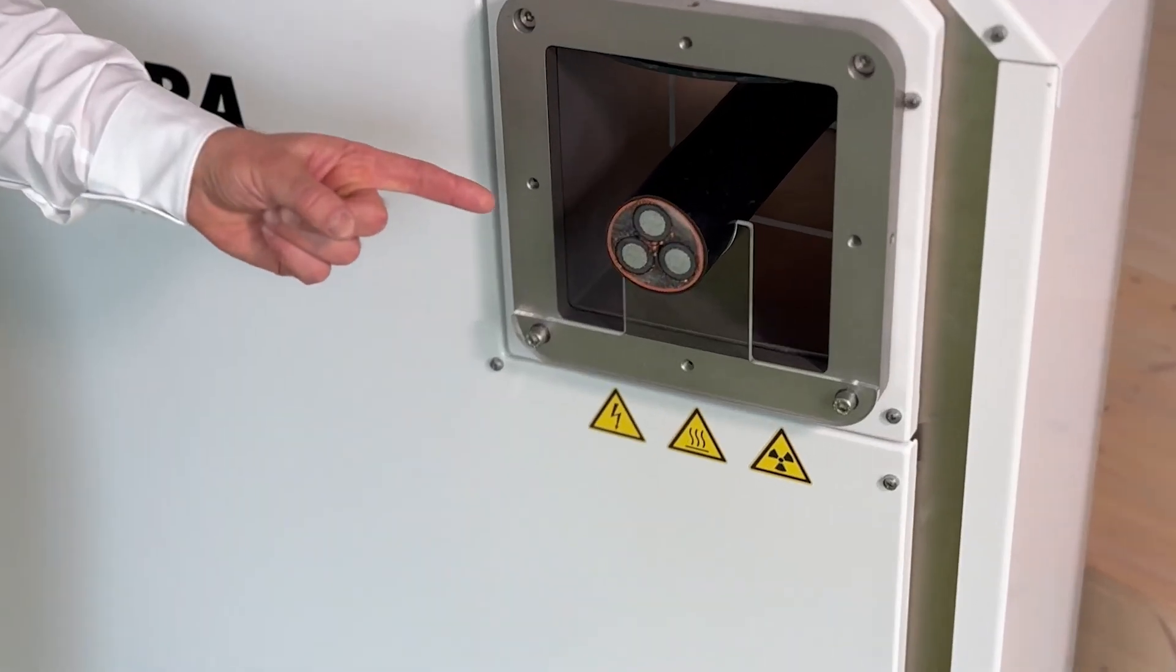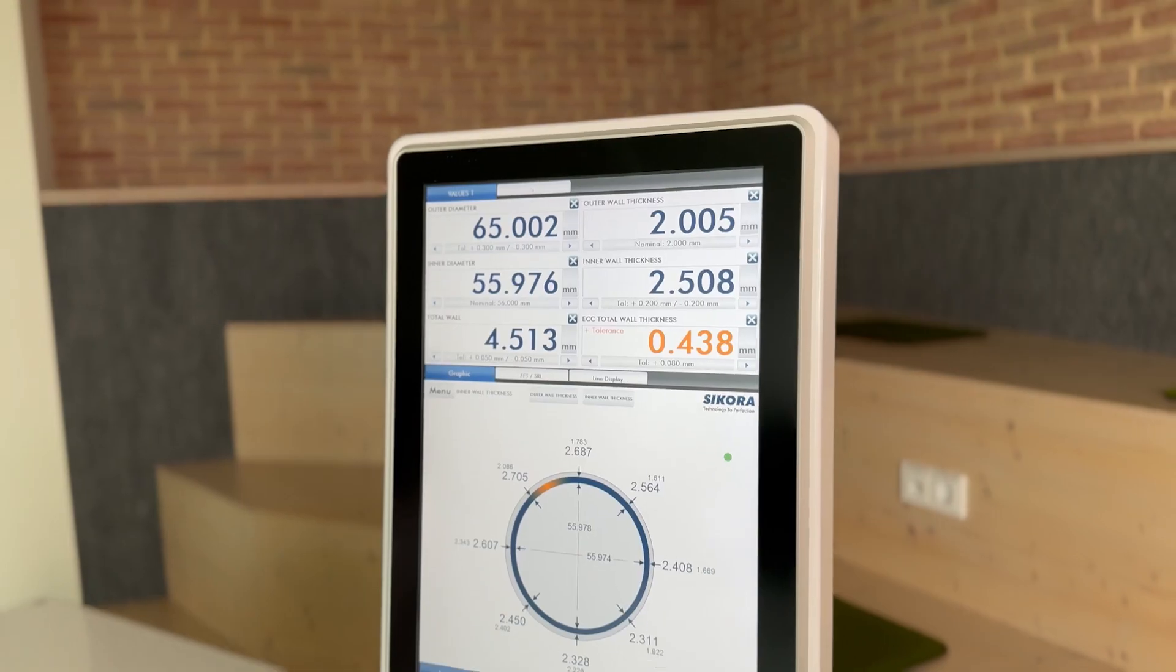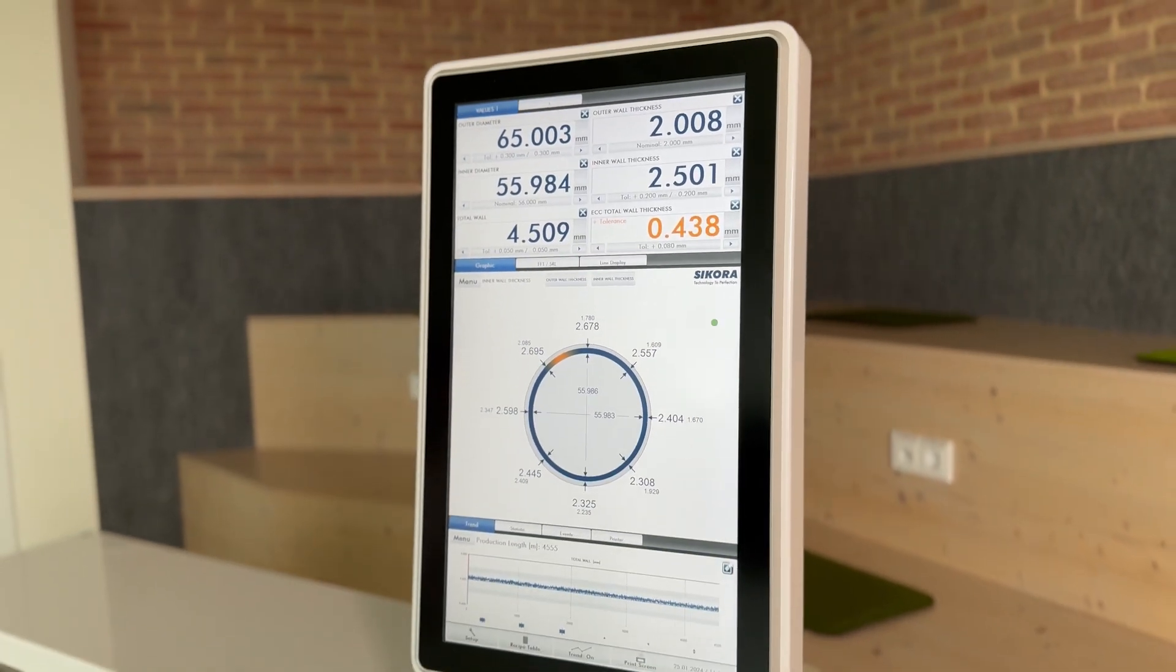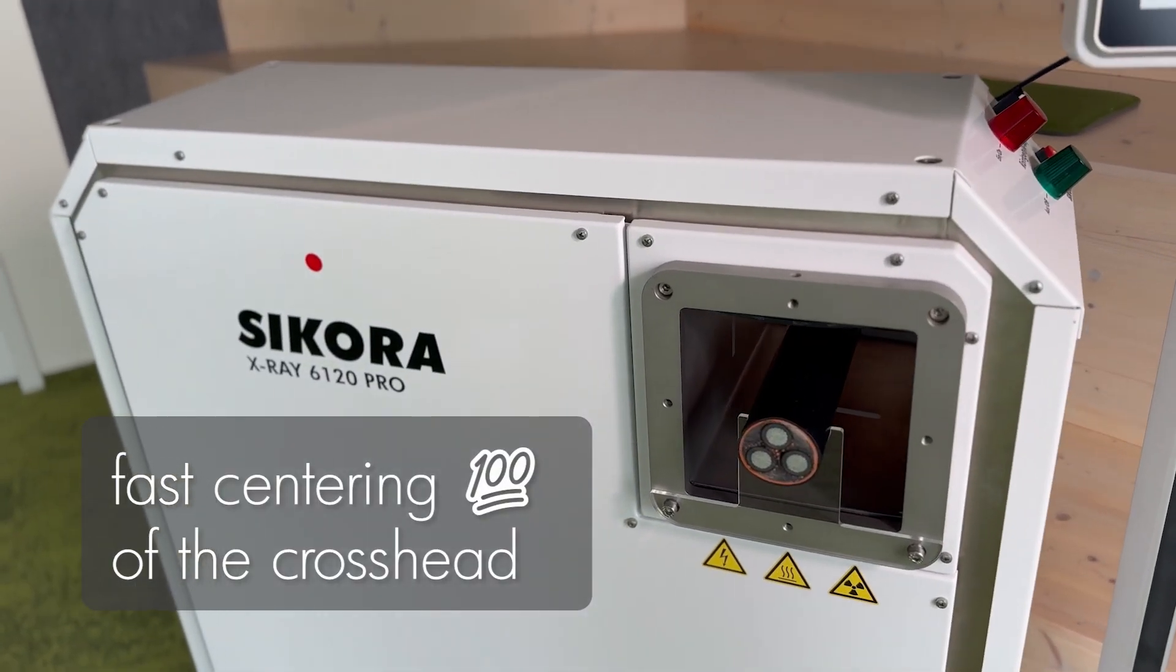It measures the wall thickness of insulation down to 0.1 mm, providing all the values and information the operator needs for fast centering of the extrusion process.